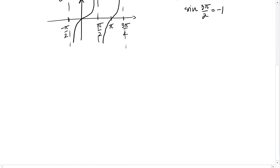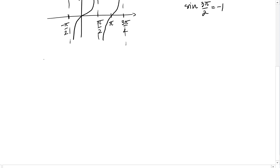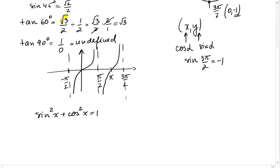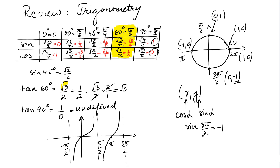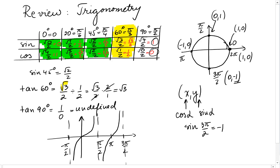Now let's take a look at some formulas. The most important formula is sine squared of x plus cosine squared of x equals 1. If we look at all these values in the table, adding sine squared of 0 plus cosine squared of 0 gives 1. Sine squared of 30 degrees plus cosine squared of 30 degrees gives 1 fourth plus 3 fourth, which is 1. The same holds for each pair — even 1 squared plus 0 is 1.